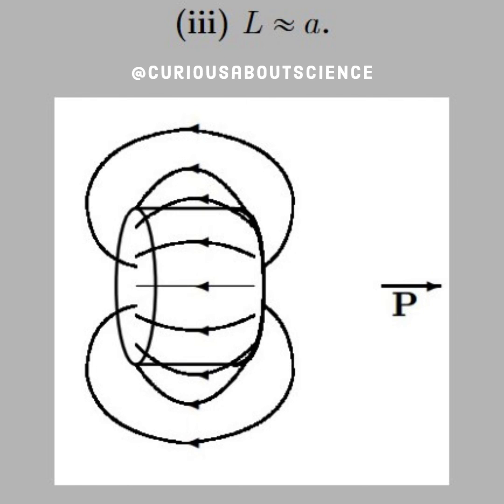For the last case, where L is approximately A, we can kind of see how things come to a happy medium, where the electric field seems to be pretty uniform amongst the cylinder, as we see in the diagram below.